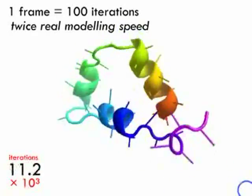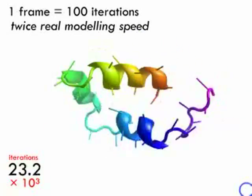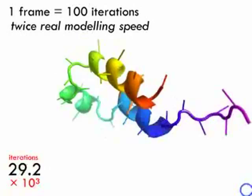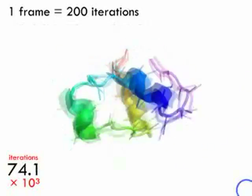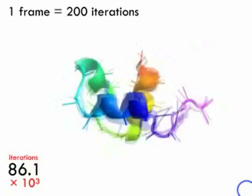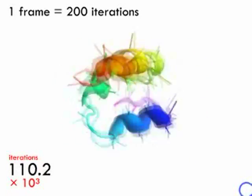This is a small all-alpha protein being simulated by point and rendered on the screen at twice real modeling speed. And now at four times real modeling speed. After some time the topology of the protein settles down.